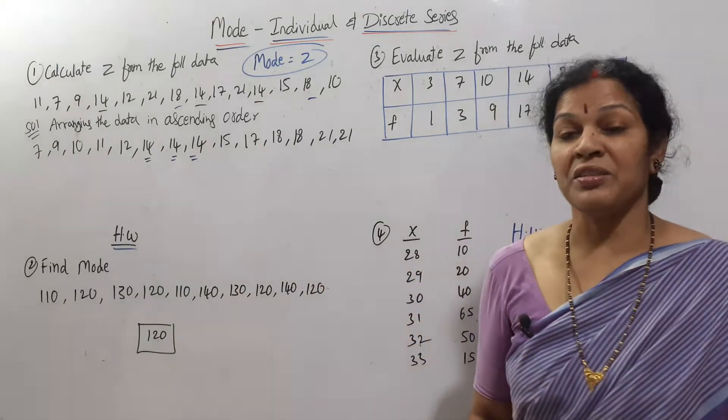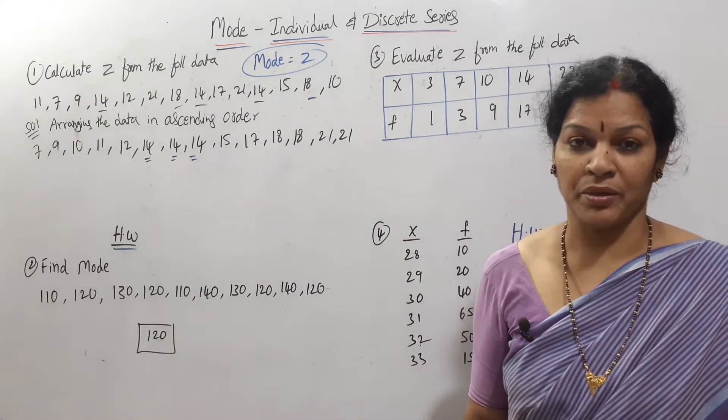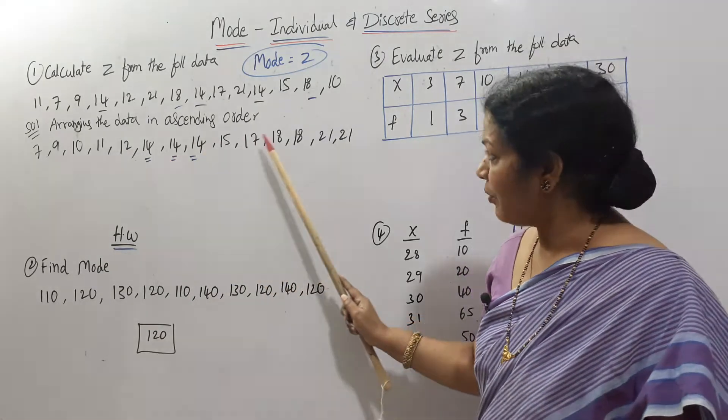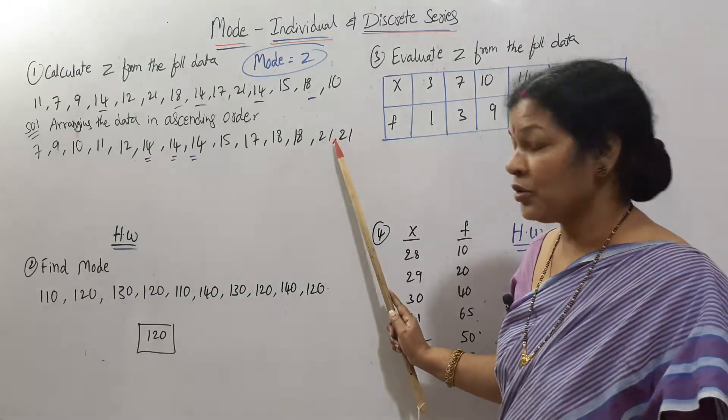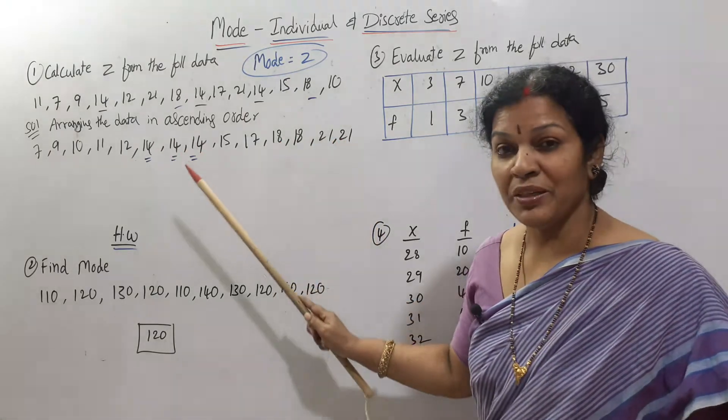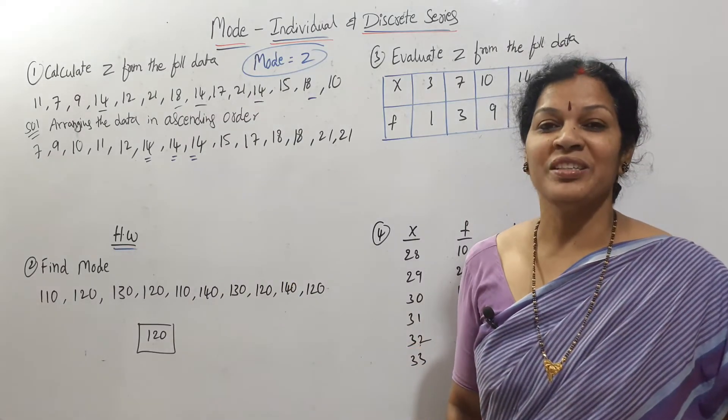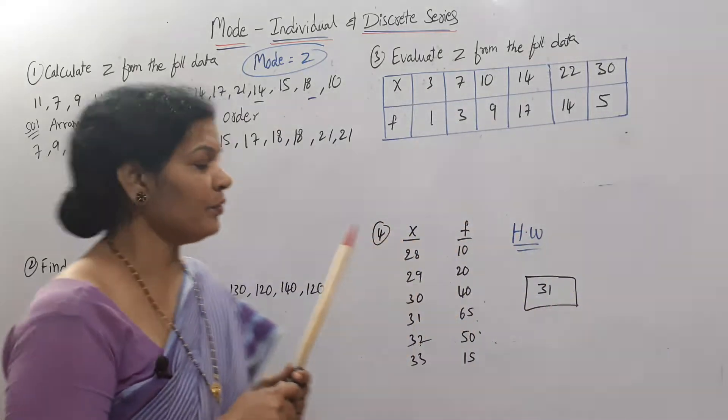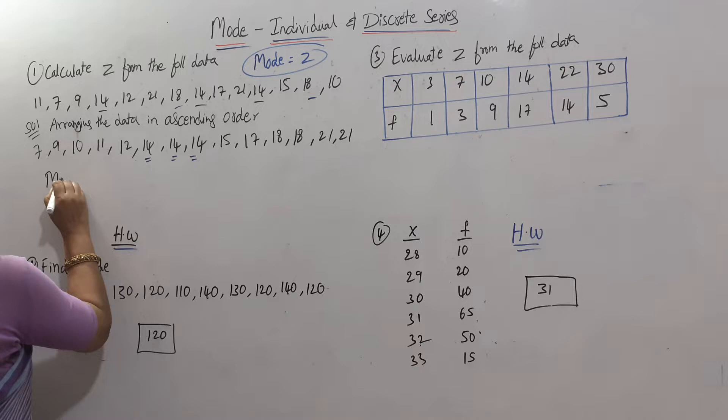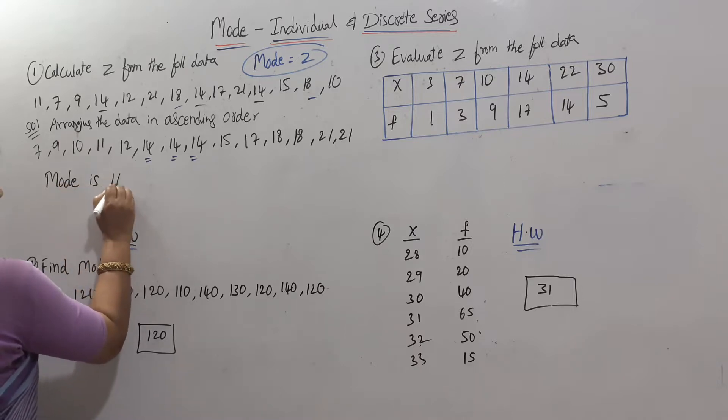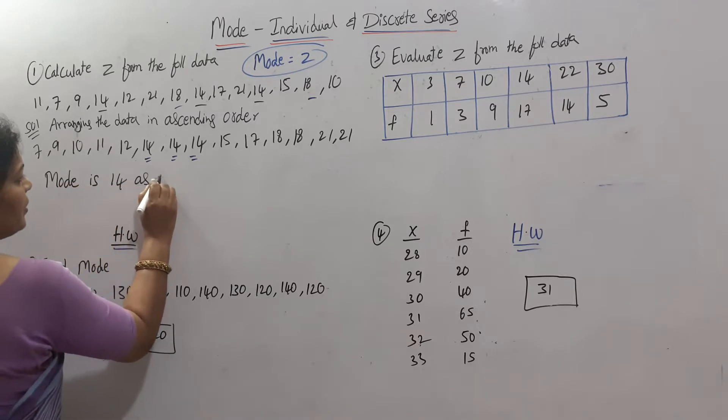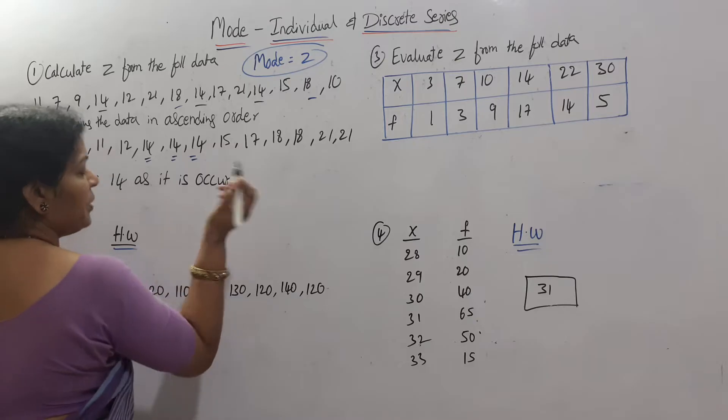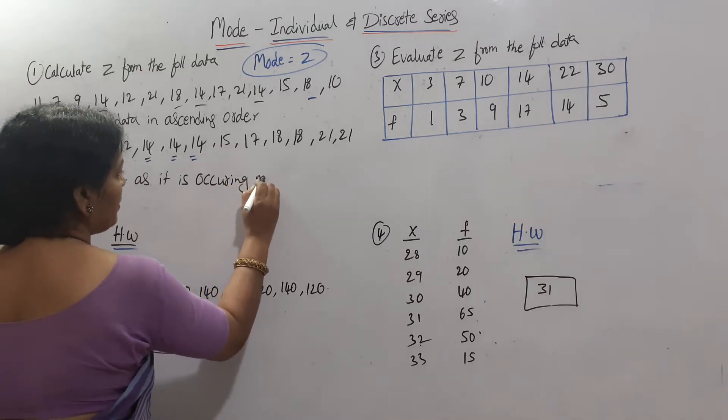After arranging into ascending order, the most repeating number - what is that number? 14. Of course, 18 is also repeating twice, 21 is also repeating twice, but 14 is repeating thrice. So mode is 14. We can write one sentence: Mode is 14 as it is occurring many times - three times.